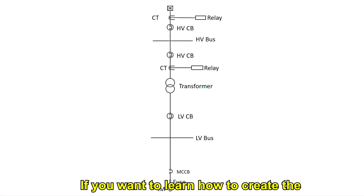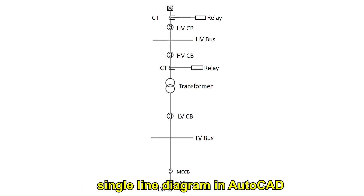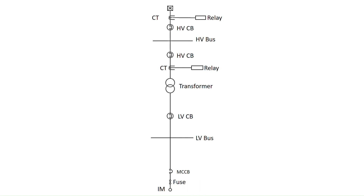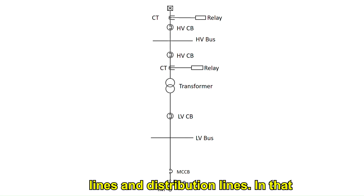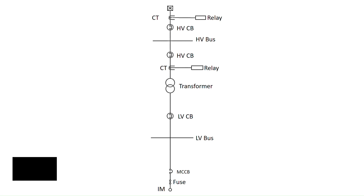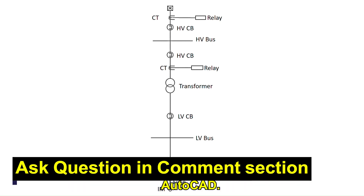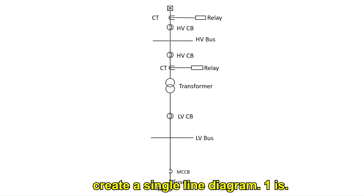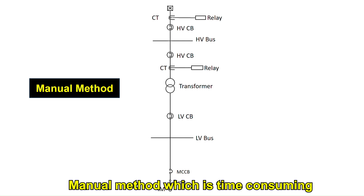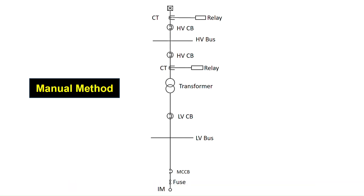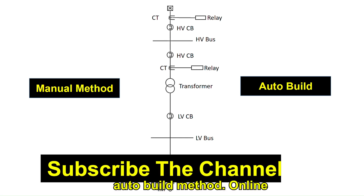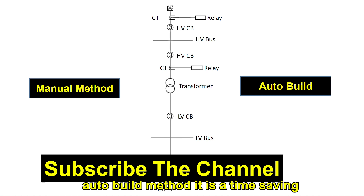I have created the single line diagram in AutoCAD. If you want to learn how to create the single line diagram in AutoCAD, in the description of this video there is a link to a playlist on design of transmission lines and distribution lines. In ETAP there are two methods to create a single line diagram: one is the manual method, which is time consuming, and the second is the auto-build method, which is a time saving method.